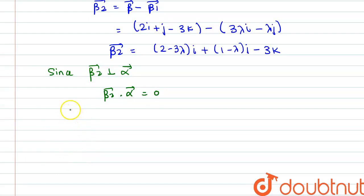So we have beta 2 here as 2 minus 3 lambda i plus 1 minus lambda j minus 3k dot product of alpha which is 3i minus j. That should be equal to 0.